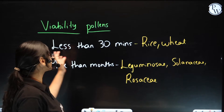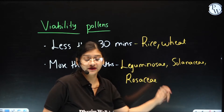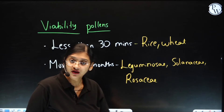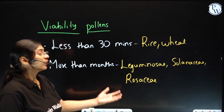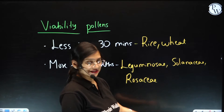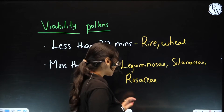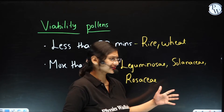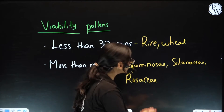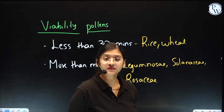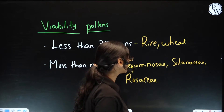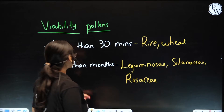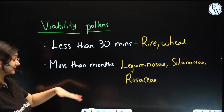Some will lose their viability within an hour. For example, rice and wheat — their viability is less than 30 minutes. But if you see pollen grains of Rosaceae — our rose belongs to this family — and Leguminosae, you know the leguminous plants which belong to this family, and Solanaceae — potato belongs to this particular family — they will be having more viability.